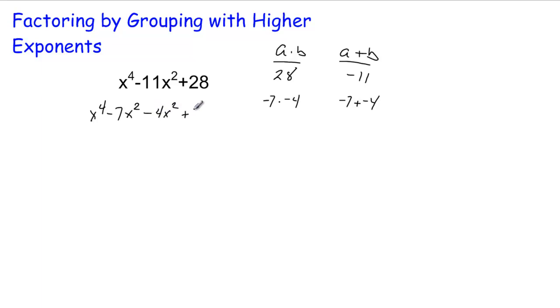minus 4x squared plus 28. So notice this technique is exactly the same as before. The only difference is the exponents. So now we take the GCF out of the first set.